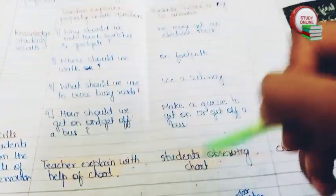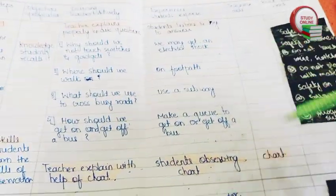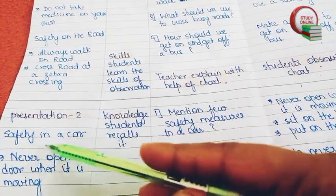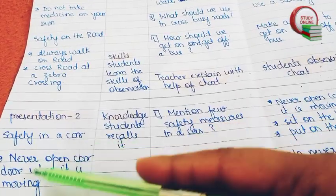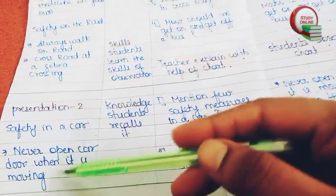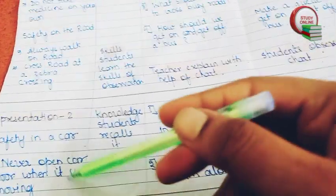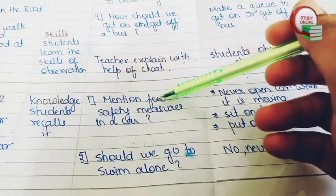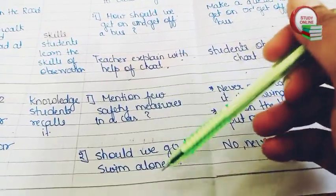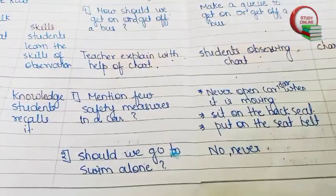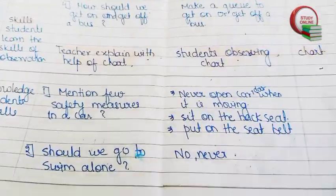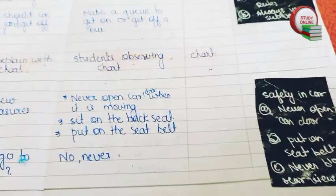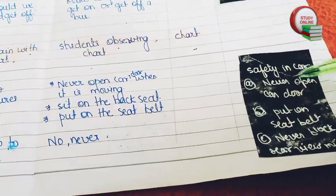Now for Presentation 2, here you can see safety in a car. We have to explain all the safety measures. Here you can see two questions related to that, and the expected answers we expect from students. Here you can see the blackboard work.